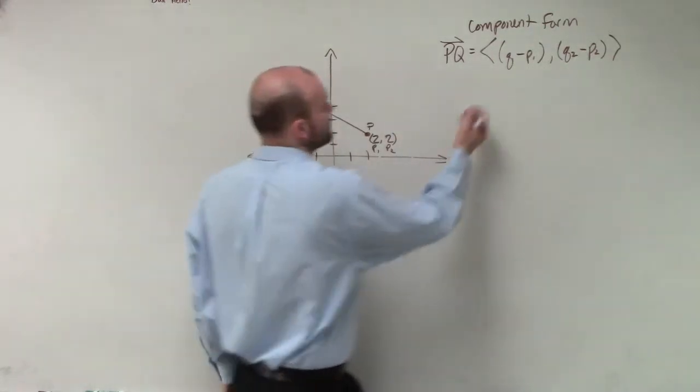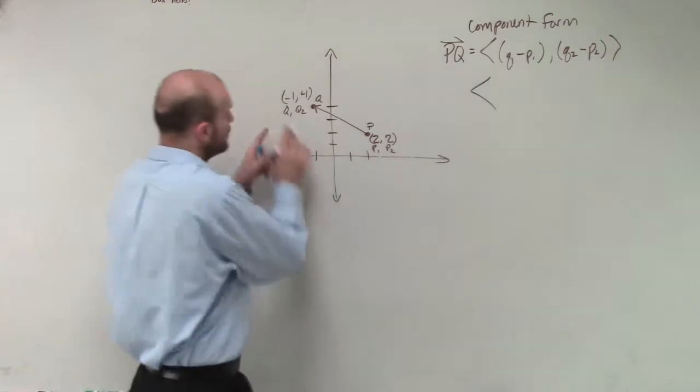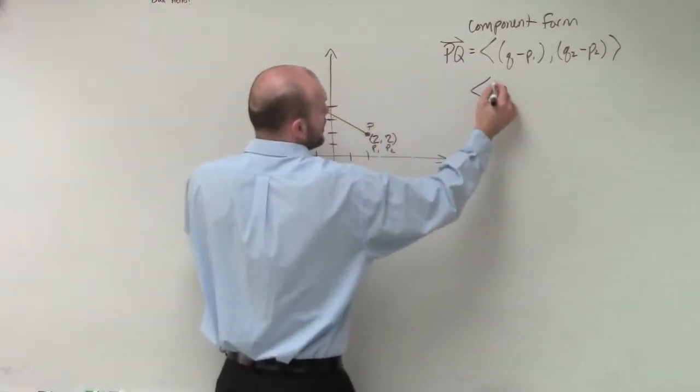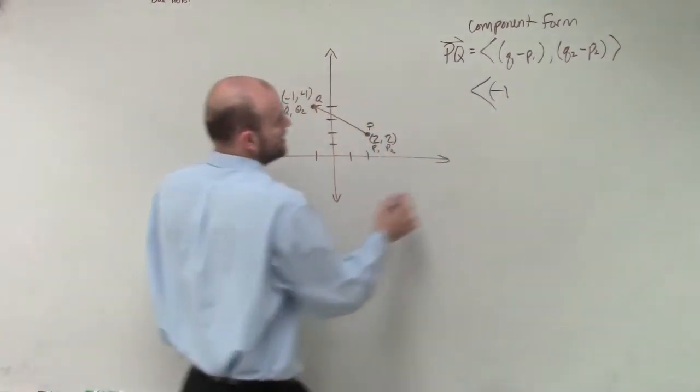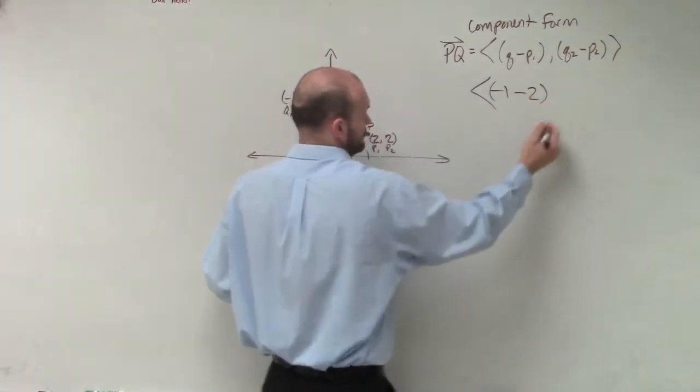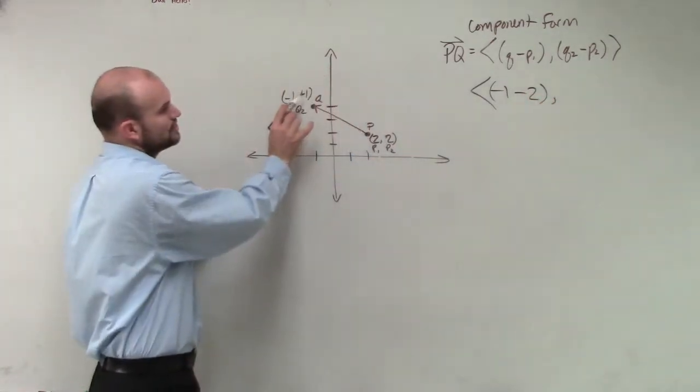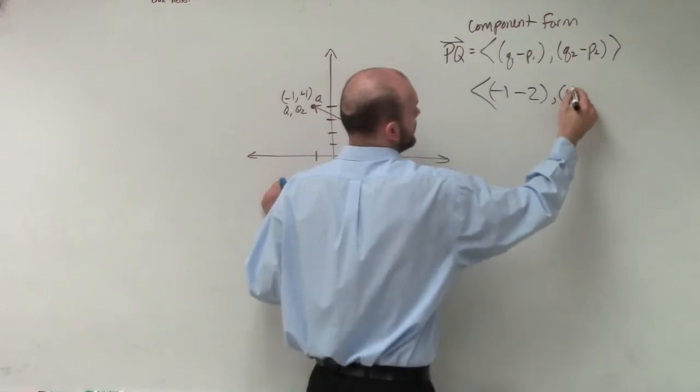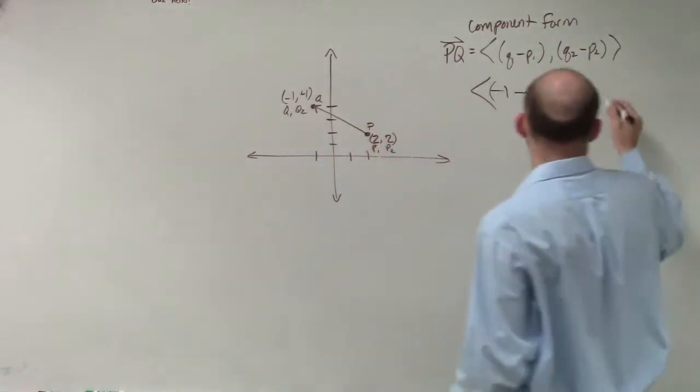So now to find my component form of my vector, I'm just going to do Q1, which is negative 1, minus P1, which is 2, comma, Q2, which is 4, minus P2, which is 2.